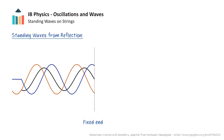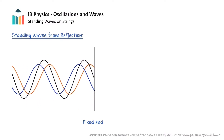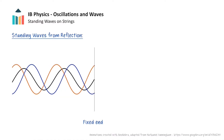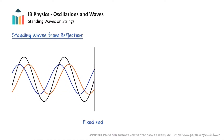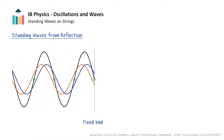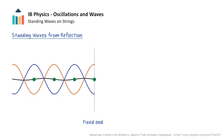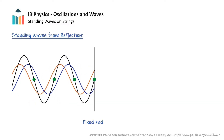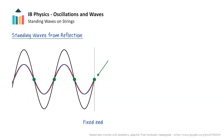The superposition of the incident and reflected waves forms the standing wave shown in black in the animation. There are points on the standing wave that always have a displacement of zero, including this point at the boundary where the string is held fixed. These are called nodes, and are a result of destructive interference between the two waves.